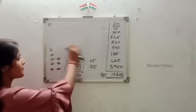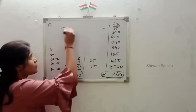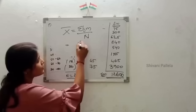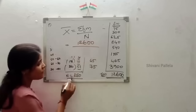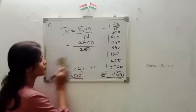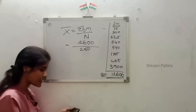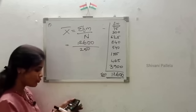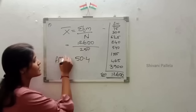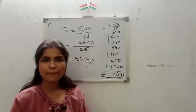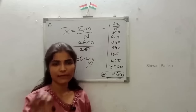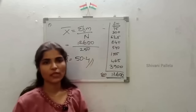What is the formula of arithmetic mean? X bar is equal to sigma fm by n. The fm total is 12,600 divided by number of frequency 250. 12,600 divided by 250 is 50.4. X bar is equal to 50.4. This is a simple method. Whether they are asking to calculate arithmetic mean from the following data, use this method only.